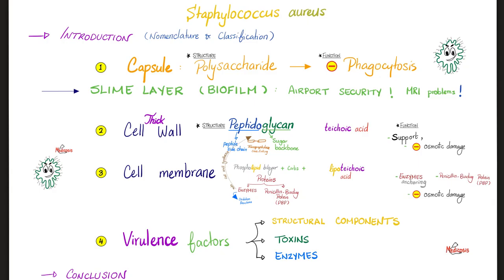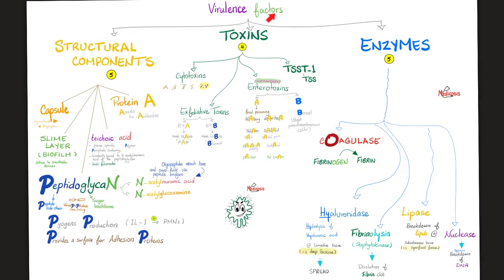In this video, we'll cover the characteristics of staph aureus, then diseases, then diagnosis and treatment. Structure: capsule, cell wall, cell membrane, virulence factors, and the slime layer. Virulence factors of staph aureus include structural components and toxins or enzymes. Structural components: capsule, slime layer, peptidoglycan cell wall, teichoic acid, and protein A. The toxins include: cytotoxins, exfoliative toxins, enterotoxins, and toxic shock syndrome toxin 1.